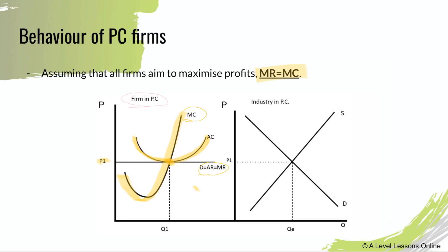To determine the price P1, you draw the demand and supply curve for the industry as a whole. From that industry graph, you get price P1 and equilibrium quantity Qe. You then carry P1 across to the firm's diagram — that's why all firms are price takers at that specific price. In an exam you don't really need to draw this curve in detail, but understand that the industry price is determined by the demand and supply of the entire market.